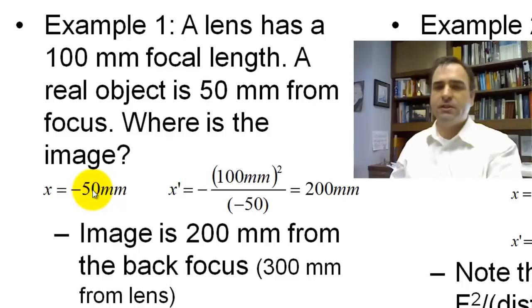Your object distance equals negative 50. So re-manipulating Newton's equations, you get focal length squared divided by the object distance is 200mm. Now this is the image from the back focus. It's really 300mm from the lens.